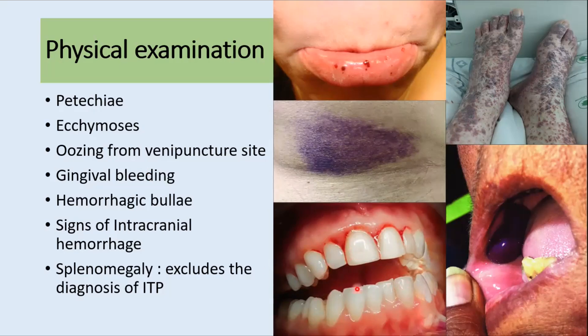Patients can present with bleeding, hemorrhagic bullae, or signs of intracranial hemorrhage like somnolence, confusion, pupillary asymmetry, hemiparesis, or reduced consciousness. Importantly, if the patient has splenomegaly, this excludes the diagnosis of ITP. We should always examine the abdomen to look for the spleen — if it is enlarged, ITP is less likely and we need to search for other pathologies.